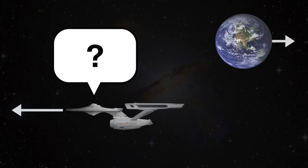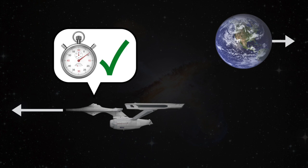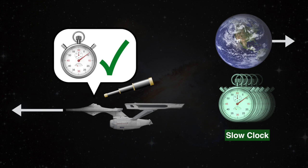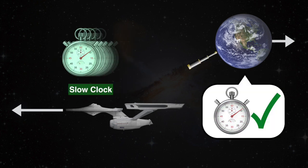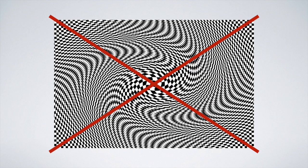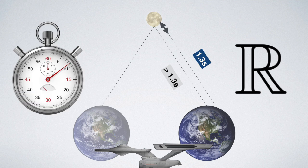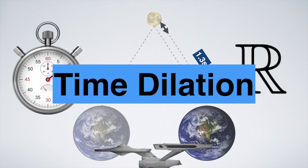The astronaut doesn't notice any of this. To him, the clocks in the spaceship are running at normal speed. Only when he observes Earth, he will be seeing everything happening in slow motion. People on Earth, on the other hand, will see the astronaut moving in slow motion through his ship. It is important to note that this is not an optical illusion. It is a real, measurable effect which is called time dilation.